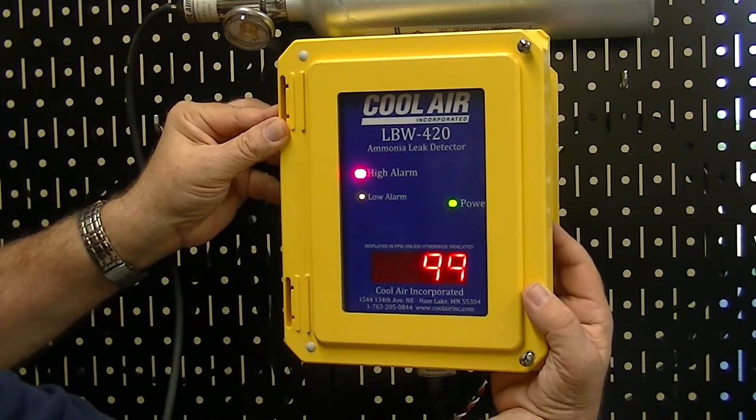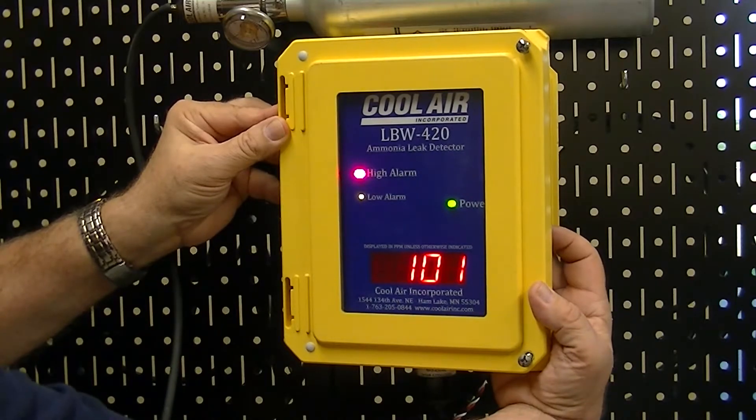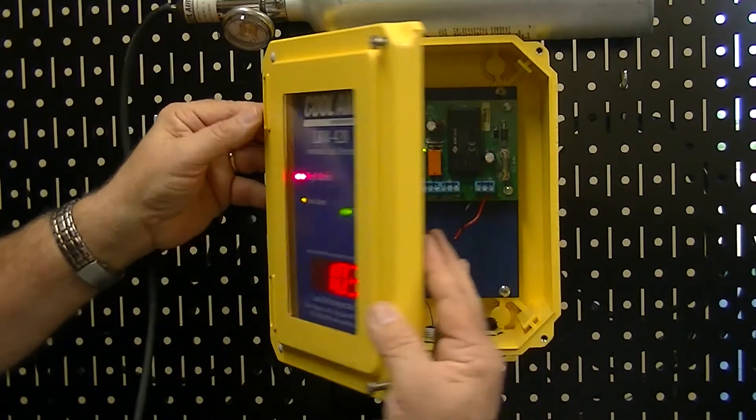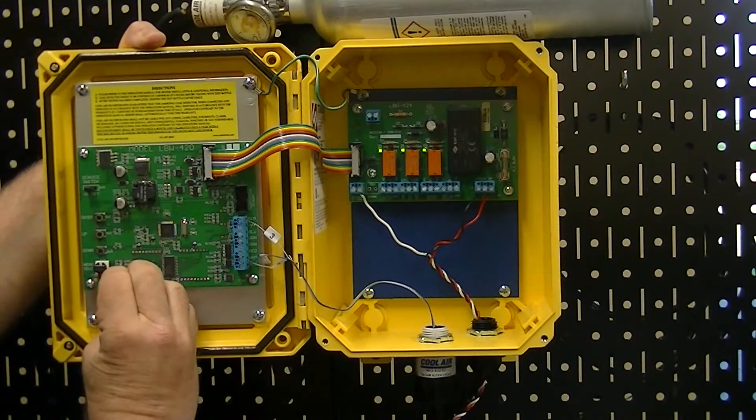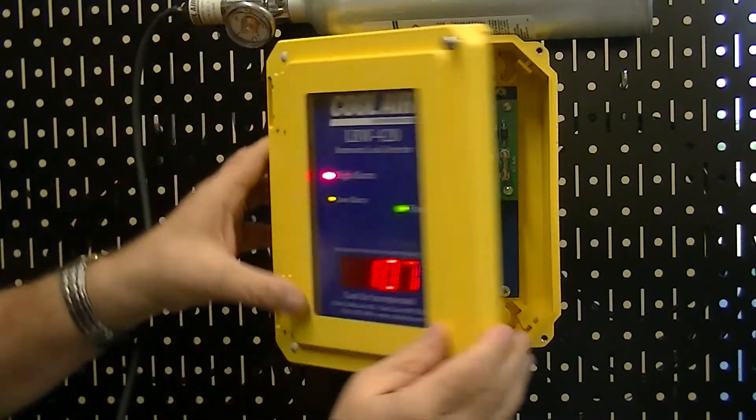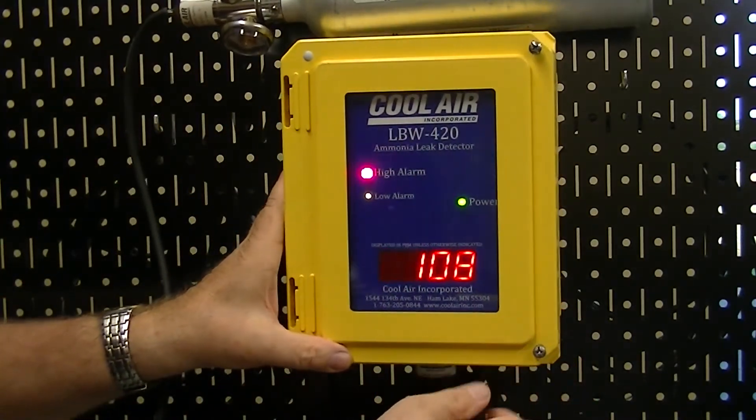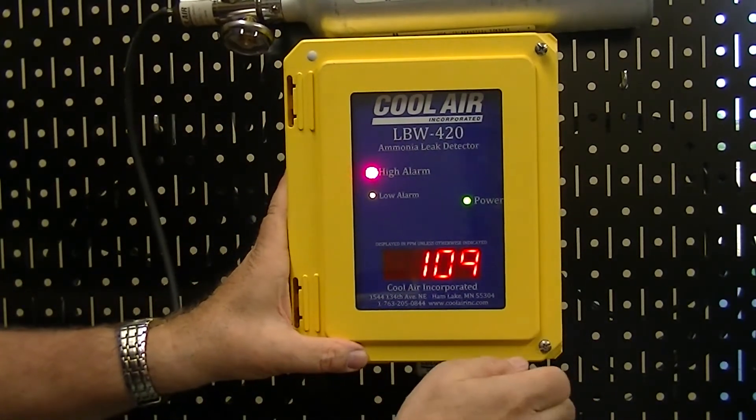At your two minute mark you want to hit your enter button for two seconds. Turn your switch position back to zero, remove the set one jumper and remove the gas.